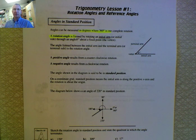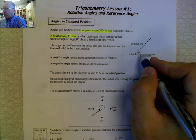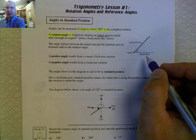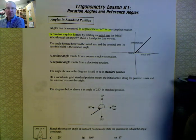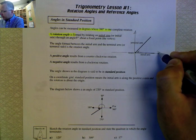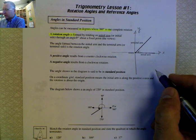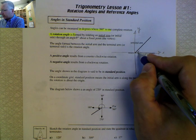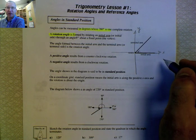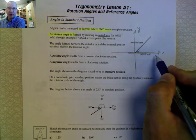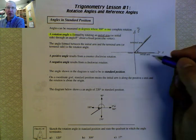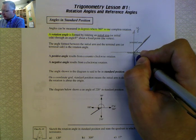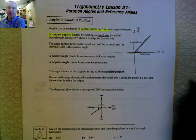Angles can be larger than 360 degrees, but for our purposes we'll focus on that range. When we draw rotation angles in a coordinate plane, superimpose an x and y axis. Every angle has an initial arm — the starting position, always on the positive x-axis — and a terminal arm, where the angle stops. The vertex, the point of the angle, is always at the origin.